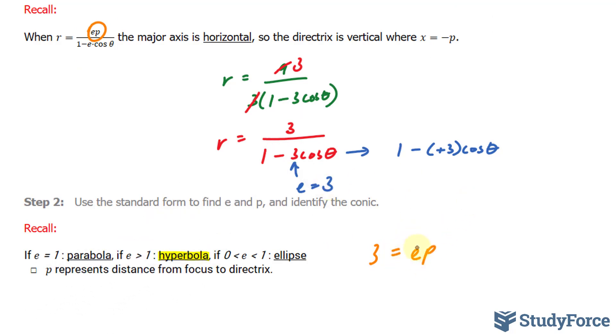And I already know that e is equal to 3. So to solve for p, I end up with 3 over 3. Therefore, p is equal to 1. And if p equals 1, the directrix is that x equals negative 1.